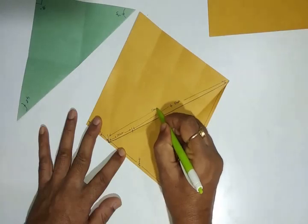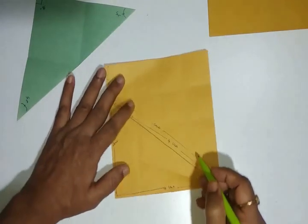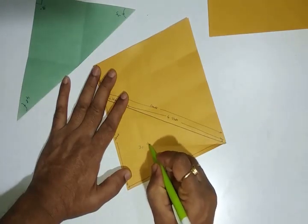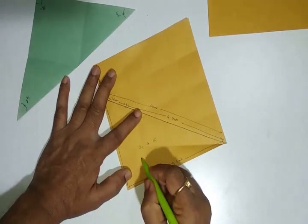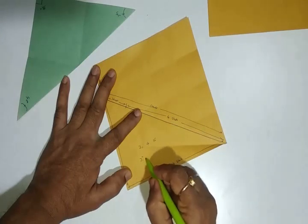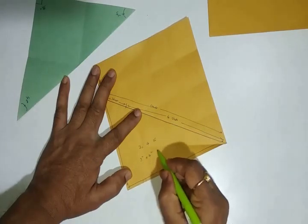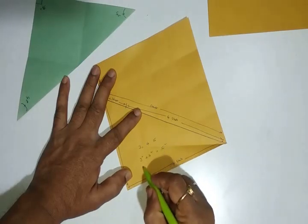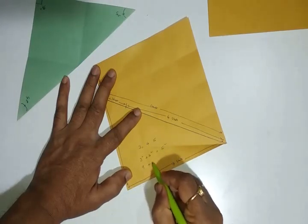So with this simple paper folding we have proved the Pythagorean triplet of 3, 4, 5. So happy folding viewers!